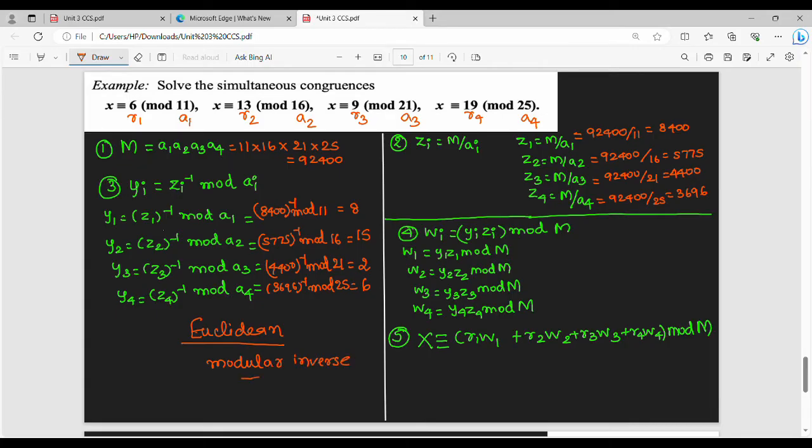Step number four: step number two and three multiply. W1 is y1 into z1: y1 value 8, z1 value 8,400, mod M, M value 92,400. Simplify to get 67,200. Next, y2 value 15, z2 value 5,775, mod again 92,400. Simplify to get 86,625.